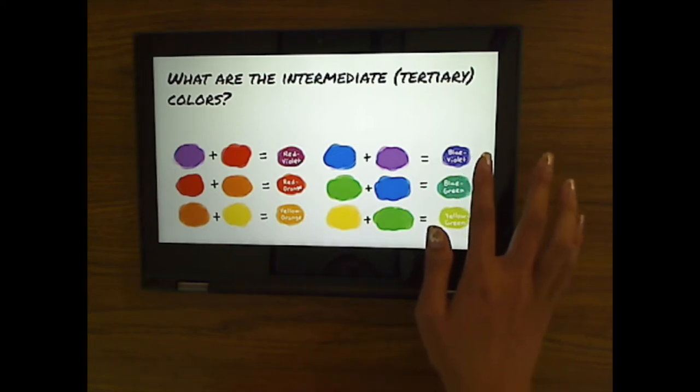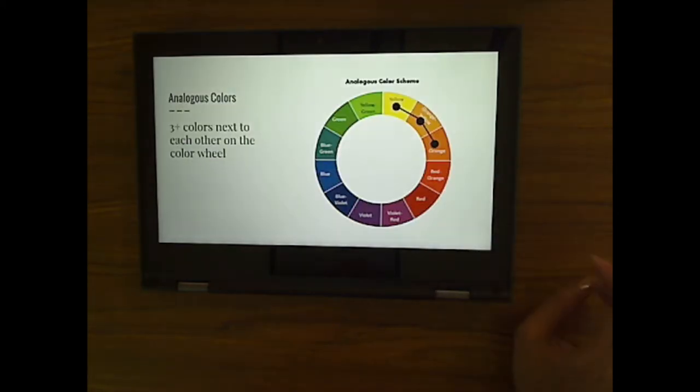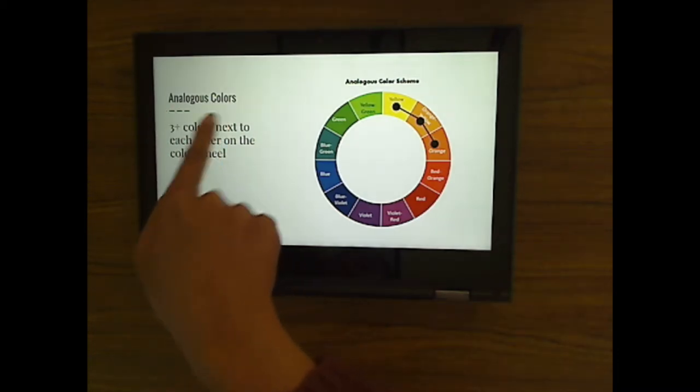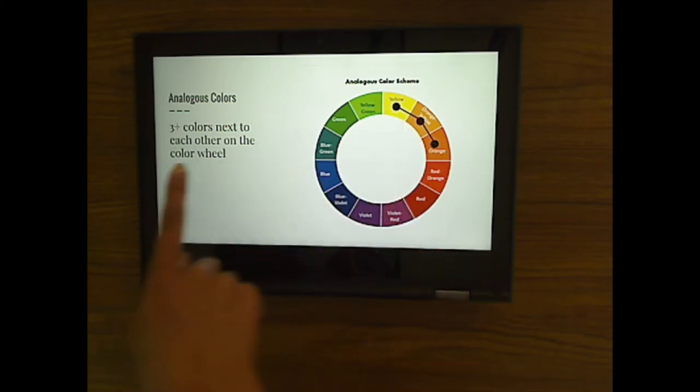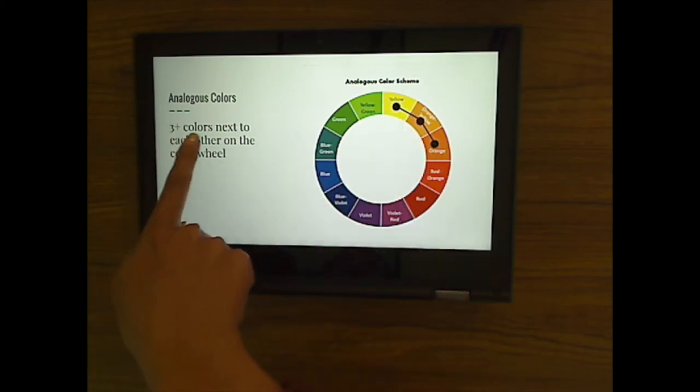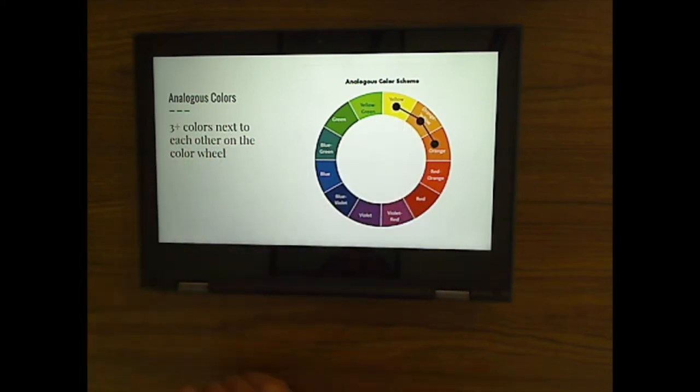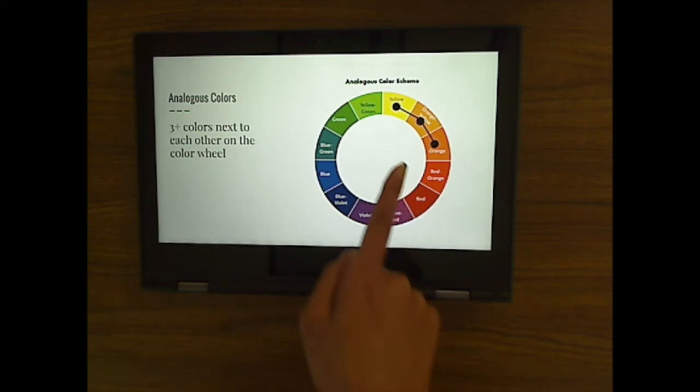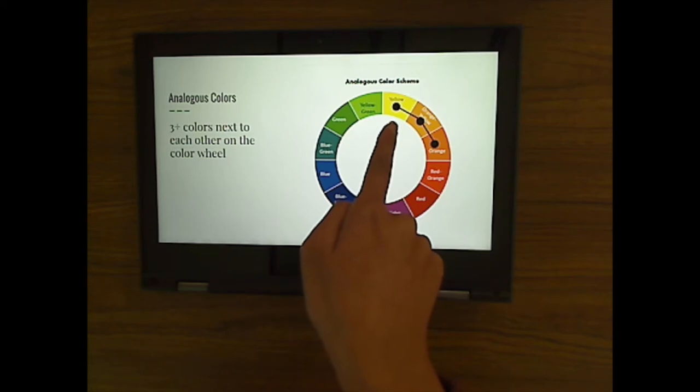We're going to use those intermediate colors and we are going to use them in an analogous color scheme. Analogous colors, that's a big word, analogous. If you see on this color wheel, it is three or more colors next to each other on the color wheel. So for this example right here, we see yellow and what's next to yellow? Orange yellow or yellow orange. And what's next to yellow orange? Orange. So these three colors, yellow, yellow orange, and orange are analogous to each other.